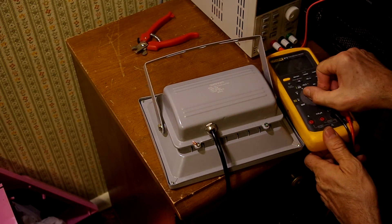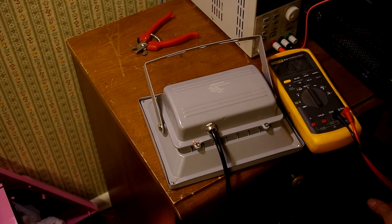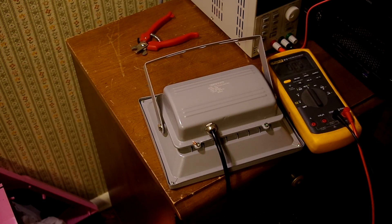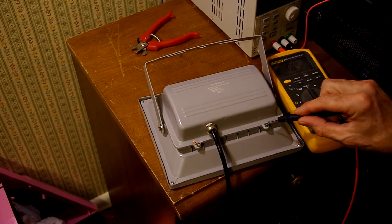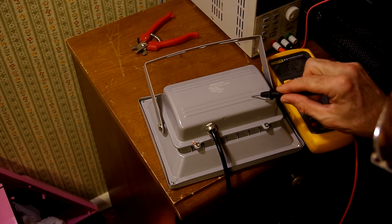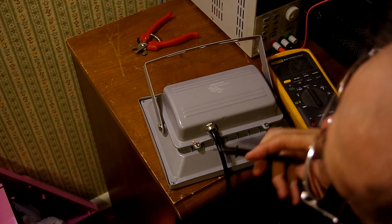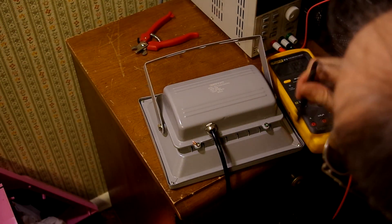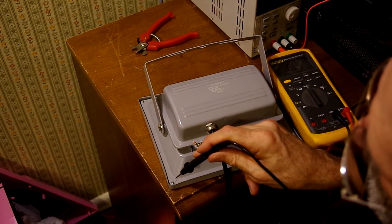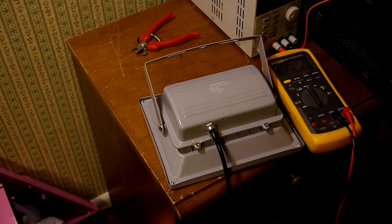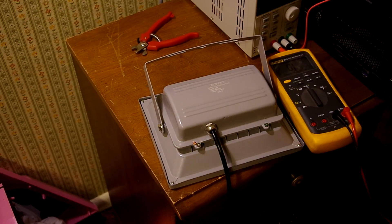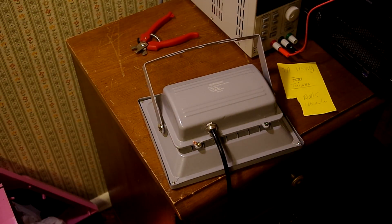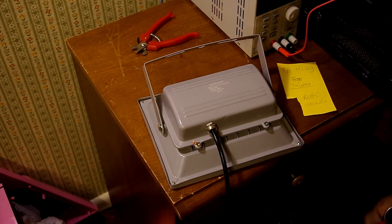Let's get the fluke meter into continuity mode. Let's check the leads, make sure it has continuity. Yeah, it works just fine. So let's check and make sure it's earthed. I got one end to the earth plug. The painted surfaces aren't going to have continuity, but the screws all work fine. So we've got the earth ground connected up just fine. So the next thing we're going to do is plug it in and see if it actually produces light.